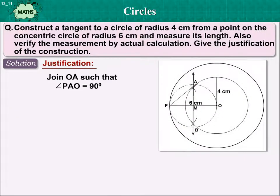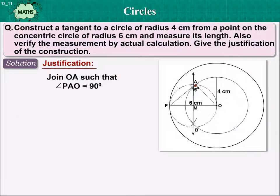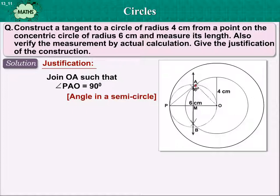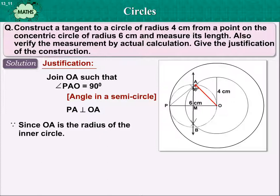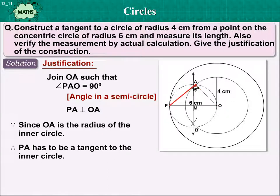Justification: Join OA such that angle PAO is equal to 90 degrees, as it is the angle in a semicircle. So PA is perpendicular to OA. Since OA is a radius of the inner circle, therefore PA has to be a tangent to the inner circle.